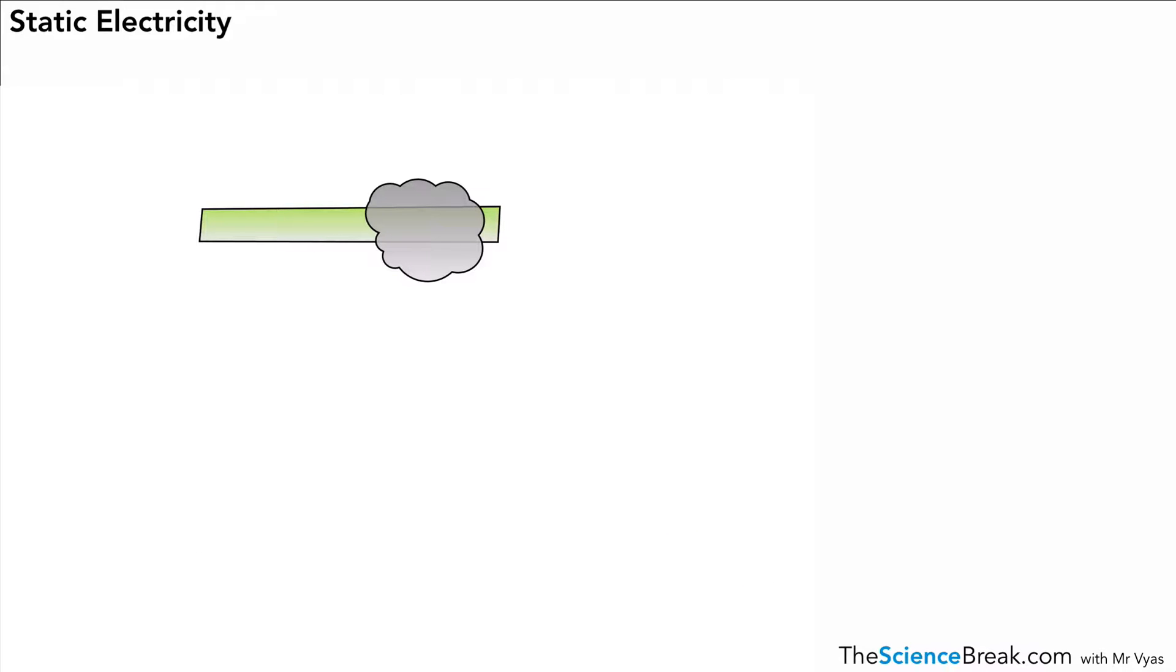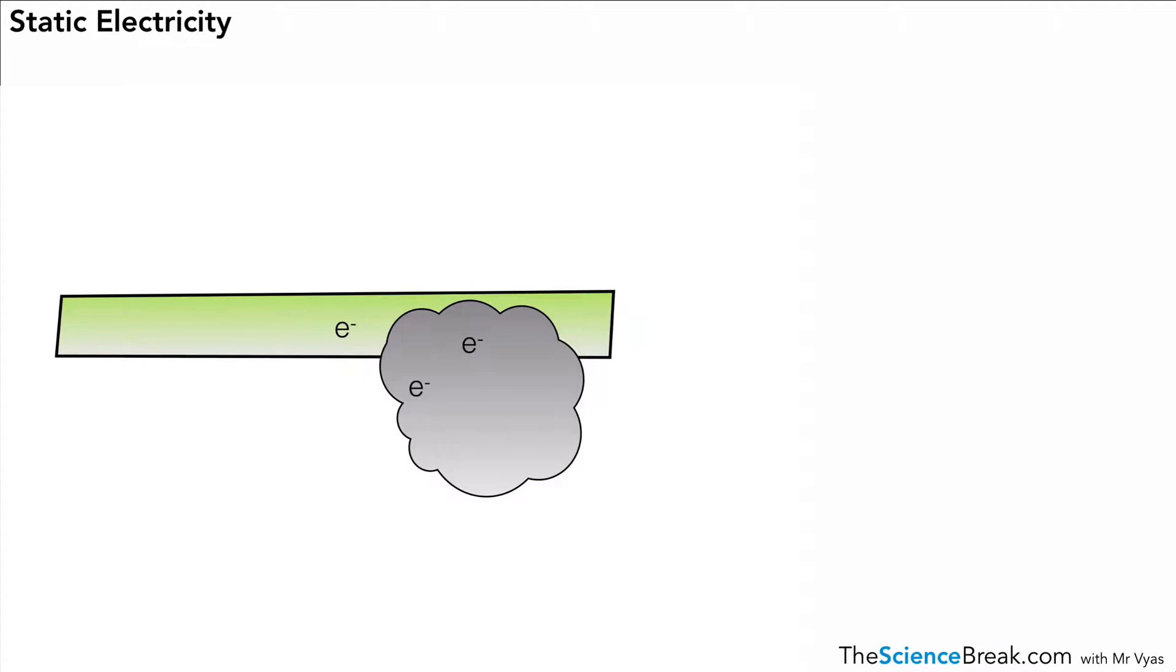We could do a similar experiment again, but this time a different type of plastic with a different type of cloth. And in this case, in this example, the electrons actually go the other way, so they go from the rod to the cloth.